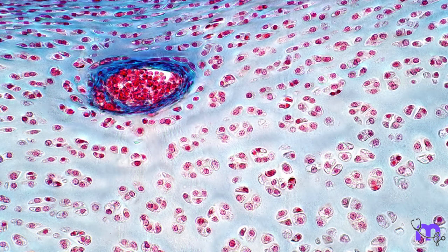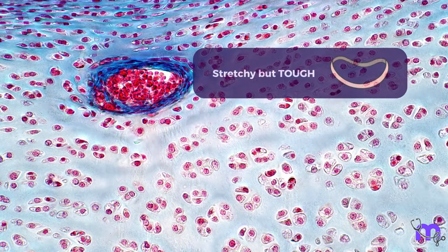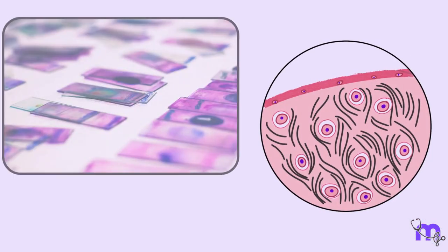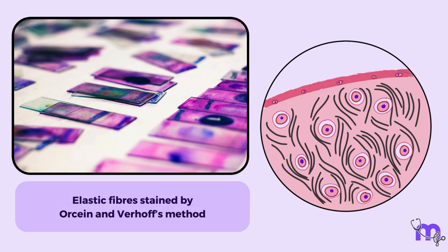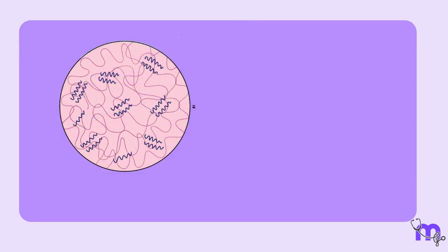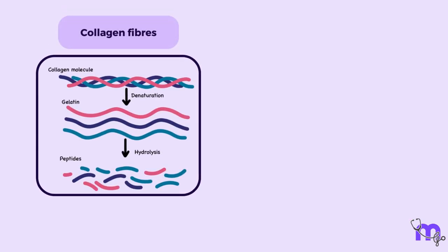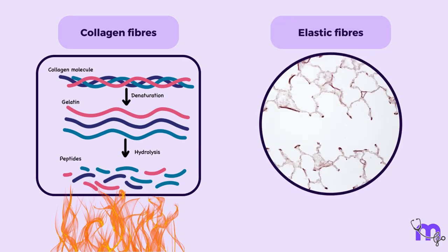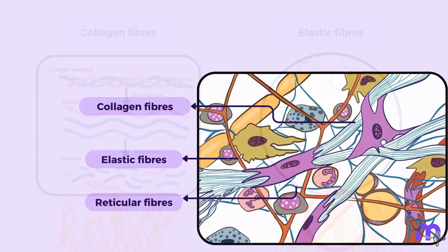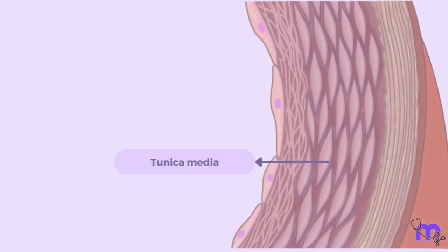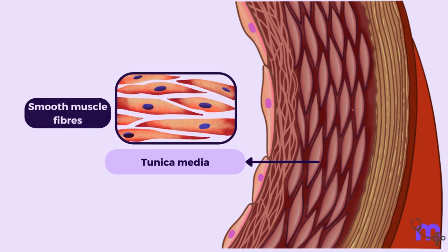Elastic fibers are not just stretchy — they are also tough, and can withstand a lot of wear and tear without breaking down. They need different staining techniques, like Orcein and Weigert's method. Normally, elastic fibers do not show properties of birefringence like collagen fibers do, unless they are stretched. While collagen fibers are highly affected by heat, elastic fibers remain unaffected by it. Elastic fibers are produced by fibroblasts; however, in some cases, like in the tunica media of large arteries, they are formed by smooth muscle fibers.